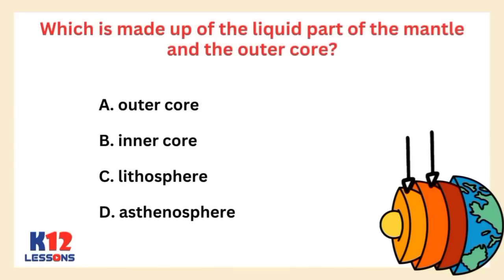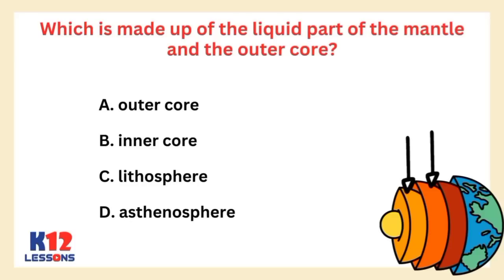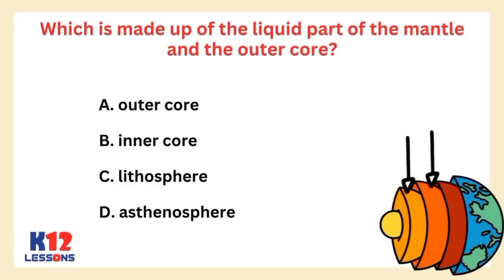Which is made up of the liquid part of the mantle and the outer core? A. Outer core. B. Inner core. C. Lithosphere. D. Asthenosphere.